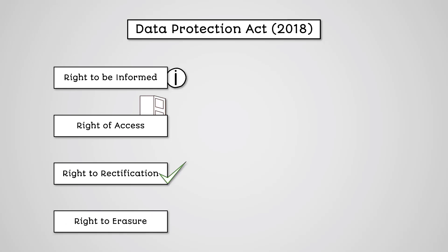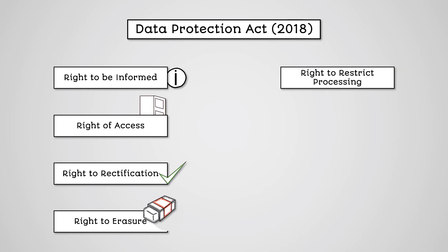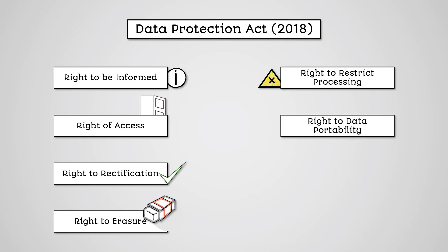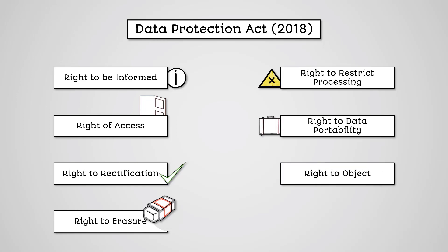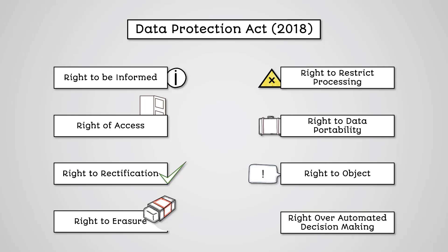Further rights include the right to erasure — you can request for your data to be deleted. The right to restrict processing — you can request that your data not be used for certain reasons. The right to data portability — you can request a copy of your data for your own purposes. The right to object — you have the right to stop your data being used for certain reasons. And the right over automated decision making — you can request reasoning behind automated decisions.